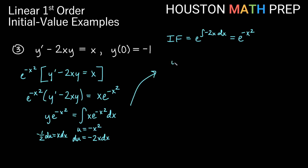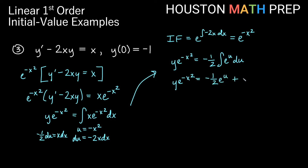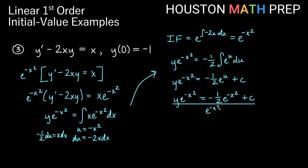So we have y times our integrating factor equals negative one half times the integral of e to the u du. Taking the antiderivative: y e to the negative x squared equals negative one half e to the u plus our constant. Replacing u back in terms of x: y e to the negative x squared equals negative one half e to the negative x squared plus c. Dividing both sides by e to the negative x squared to solve for y: the exponentials cancel in the first term giving negative one half, and c divided by e to the negative x squared makes c e to the positive x squared. That is our general solution.